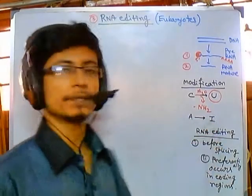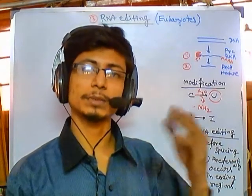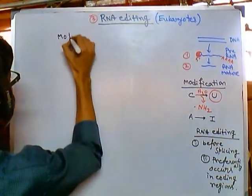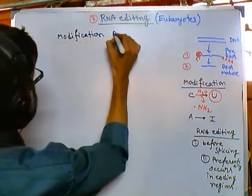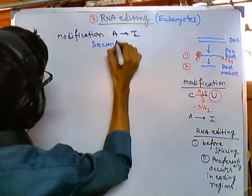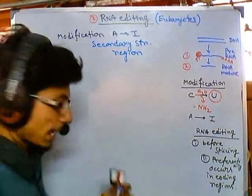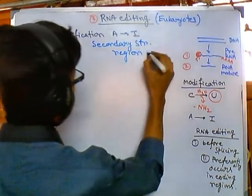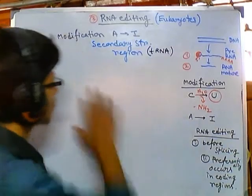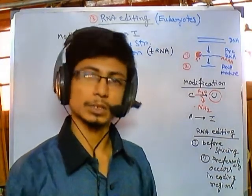This A-to-I modification usually occurs in the secondary structure region of RNA. The secondary structure region is most commonly found in tRNAs. So in most cases we are going to find these modifications in tRNA, but also in mRNA where there are secondary structures like stem-loop structures and hairpin structures.